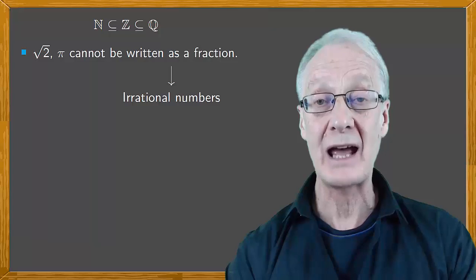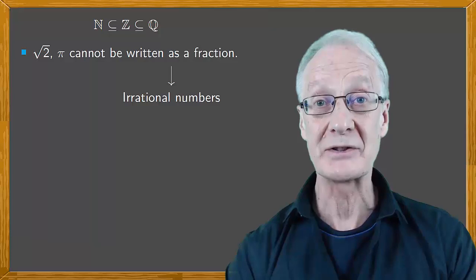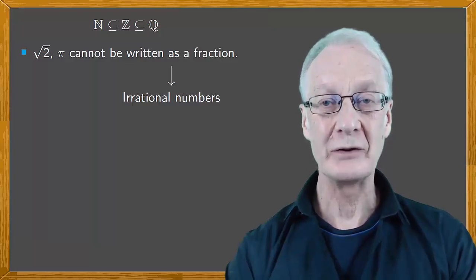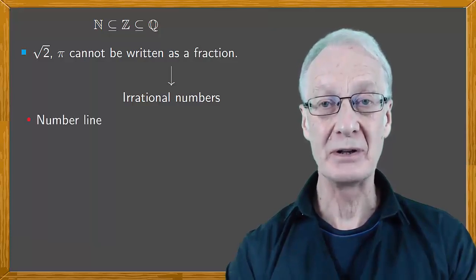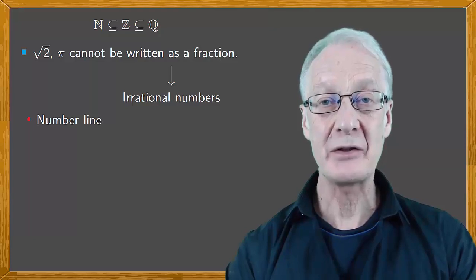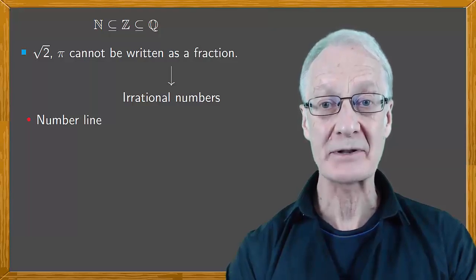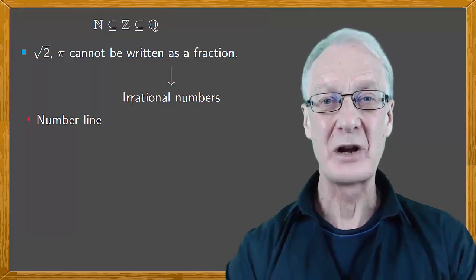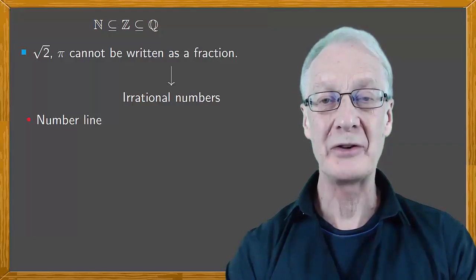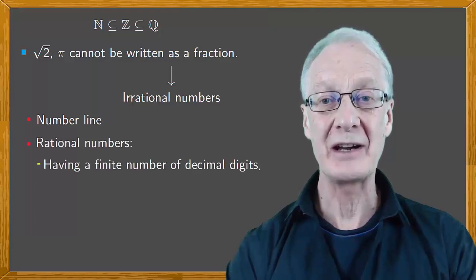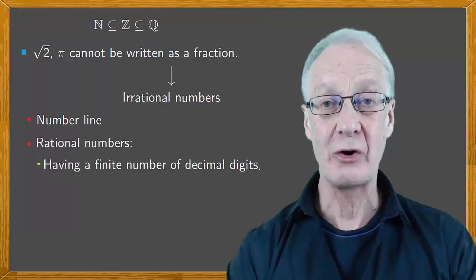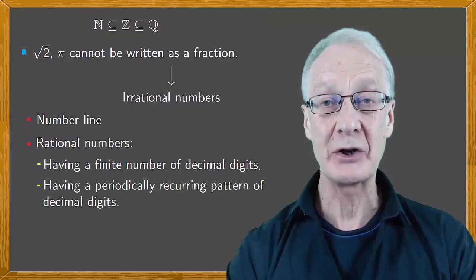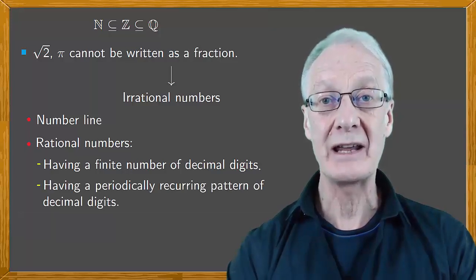Together, the rational and irrational numbers form the set known as real numbers. One way to think of real numbers is as points on the number line. In between the points that represent rational numbers are gaps, which correspond to irrational numbers. When real numbers are put in the form of decimals, rational numbers have a finite number of decimal digits, or a periodically recurring pattern of decimal digits. The rest are irrational numbers.